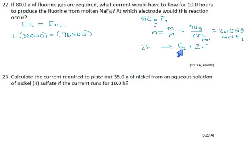This reaction tells us every mole of fluorine that you make is going to require twice that many electrons. So if you're making 2.1 moles of fluorine you're going to need, multiply that by 2, 4.2105 moles of electrons. That's our n_e that can go over here.